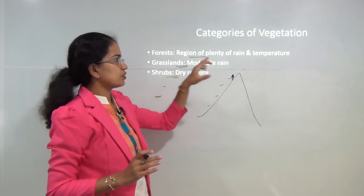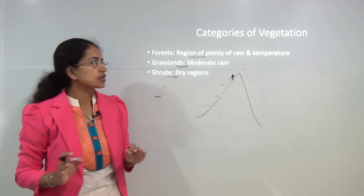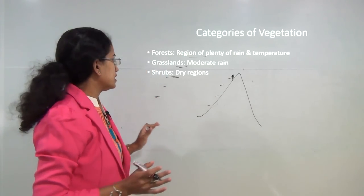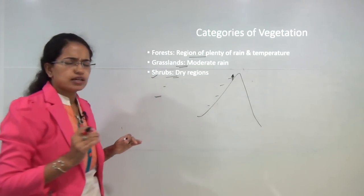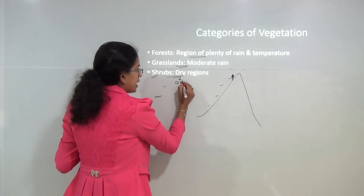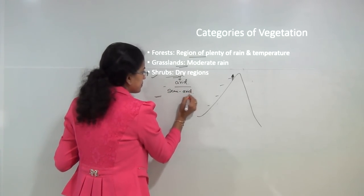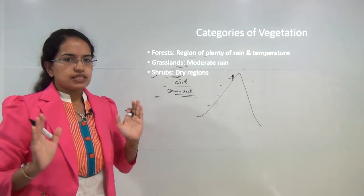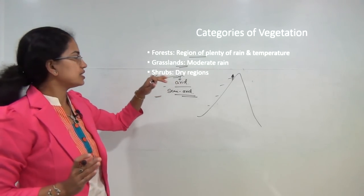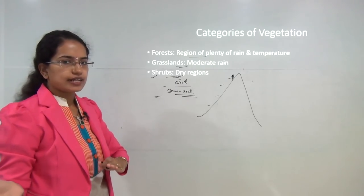Forest areas are present where you have ample rainfall and good temperature. Grasslands occur in regions of moderate rainfall, and finally you have shrubs that occur in dry areas. We also call these dry areas as arid, semi-arid, or semi-dry areas. So vegetation can broadly be classified as forest, grasslands and shrubs. Now we will understand all of these and their subcategories one by one.